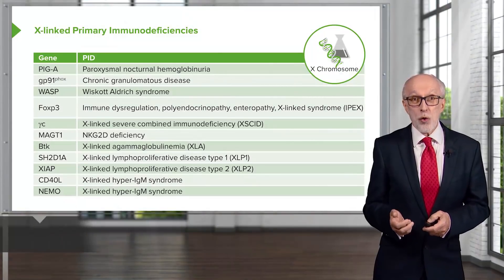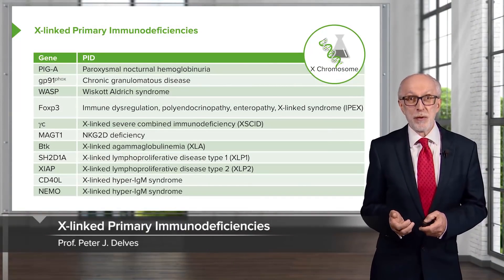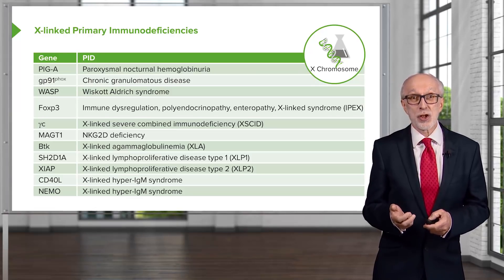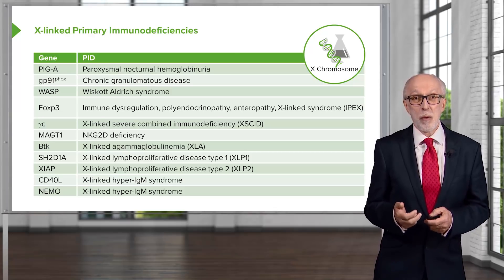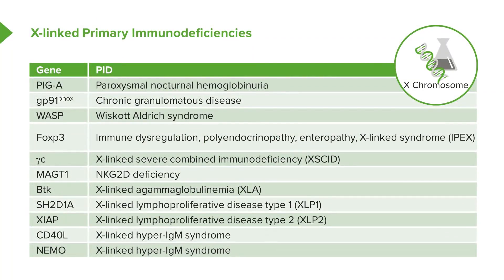Quite a few primary immunodeficiencies are caused by genes present on the X chromosome, and therefore these diseases are more common in boys. Here is a list of some of the X-linked primary immunodeficiencies, and we will be discussing some of these a little later in this lecture.